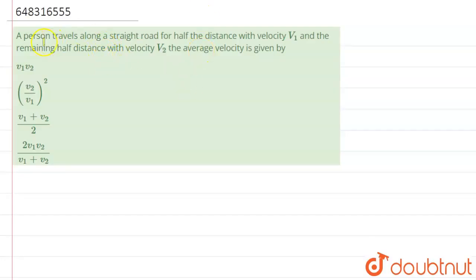Hello students, now we are going to see this question. The question says that a person travels along a straight line road, half the distance with velocity v1 and remaining half distance with velocity v2. The average velocity is given by what?